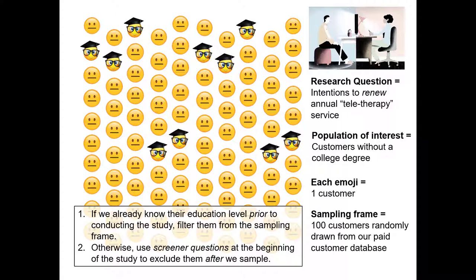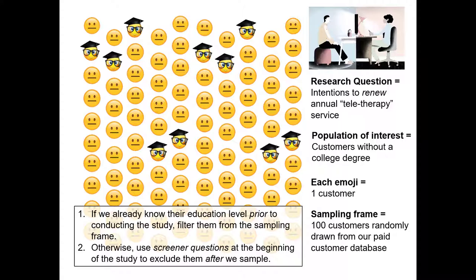Alternatively, if we didn't know their level of educational attainment, we would simply randomly sample from the entire frame and then use a screening question somewhere in our survey to identify someone's educational level, and screen out those individuals who actually have a college degree. Of course, in that case, we would have to sample more than 20 because some people probably have a college degree. In the example here, let's imagine we already knew whether someone had a college degree. We simply exclude those 10 individuals, and now our sampling frame is reduced to 90, but our objective of sampling 20 remains the same.